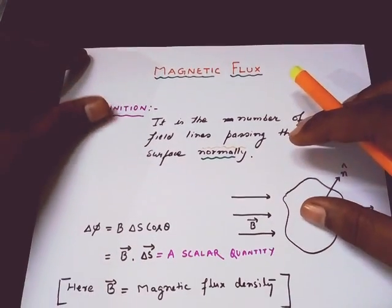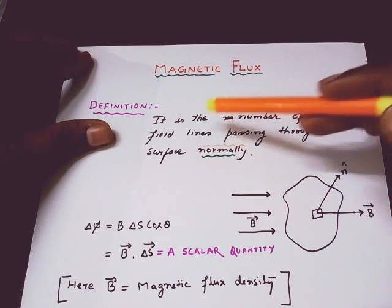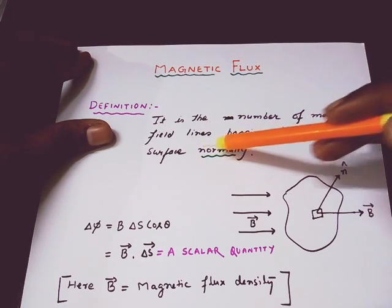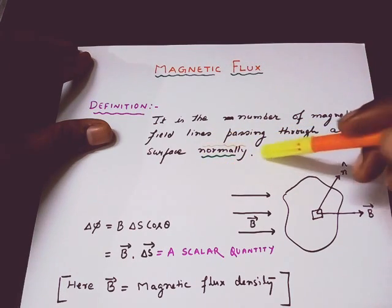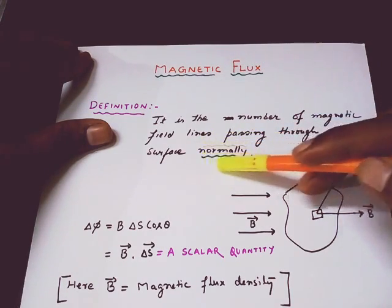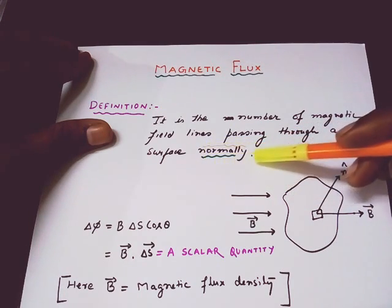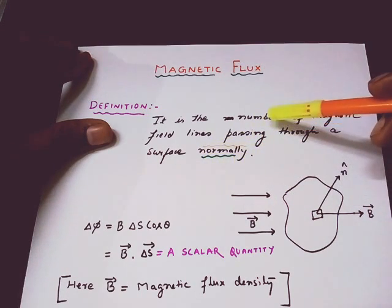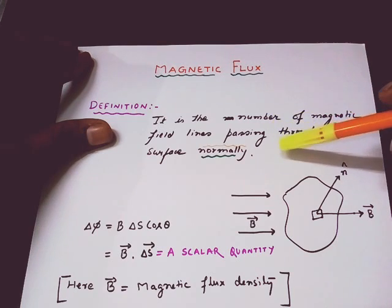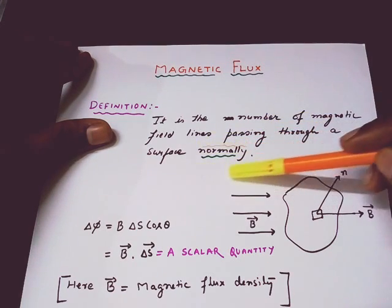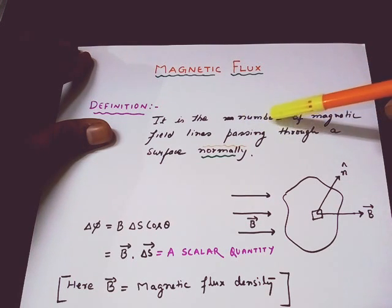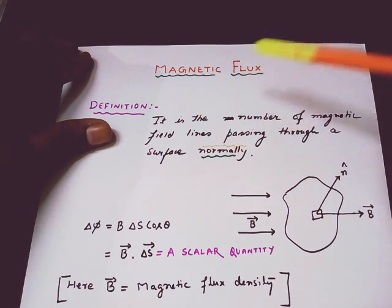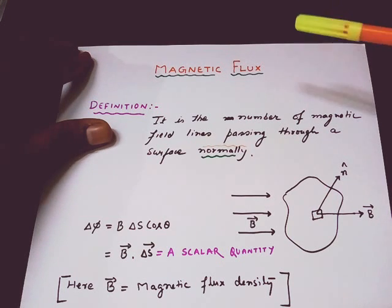So first of all, the definition: magnetic flux is the number of magnetic field lines passing through a surface normally. This word 'normally' is very important — if you are not using the word 'normally' then the definition will go wrong. So I am giving emphasis on this word 'normally'.